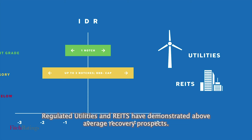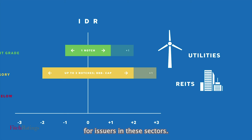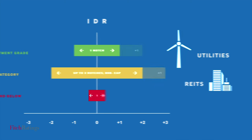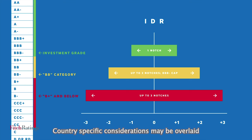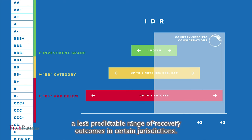Regulated utilities and REITs have demonstrated above-average recovery prospects; thus Fitch applies a one-notch uplift to the debt instrument ratings for issuers in these sectors. Country-specific considerations may be overlaid to constrain the upward notching of instrument ratings, to reflect a less predictable range of recovery outcomes in certain jurisdictions.